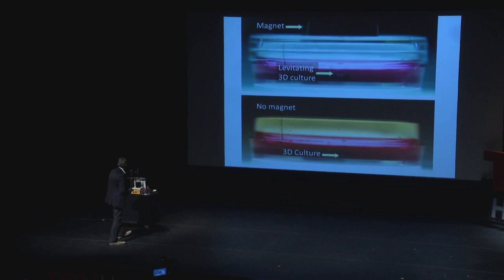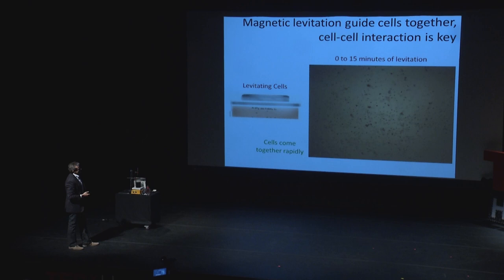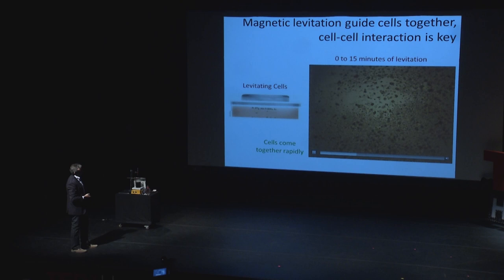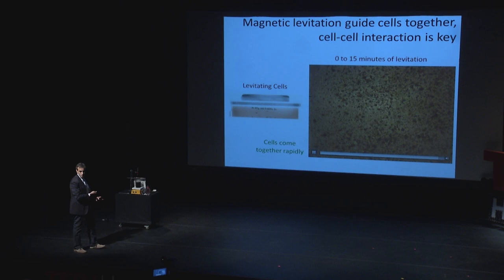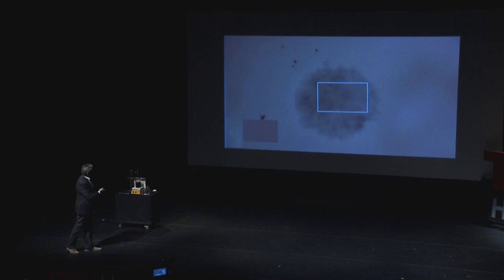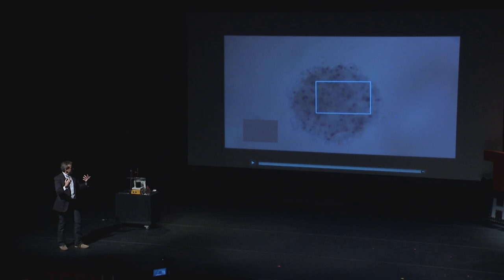A picture is worth a thousand words. We have a movie here — the first 15 minutes — for you to see how the magnetic field brings the cells together. These are adenocarcinoma cells. You just bring them together and they start cell-cell interaction, forming 3D structures overnight. When these cells come together, they excrete proteins — the extracellular matrix, which is the cement, the glue that keeps the tissue together. That's very important, and it's not trivial to get that in two-dimensional cell growth.